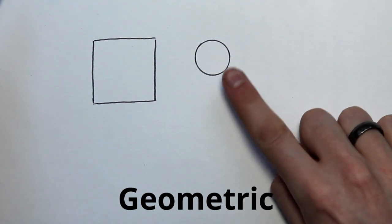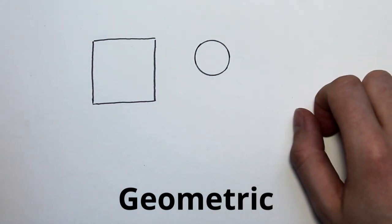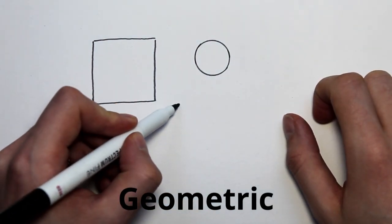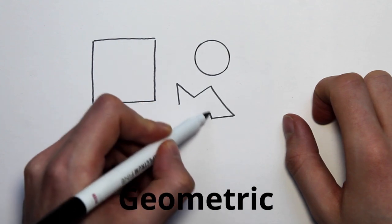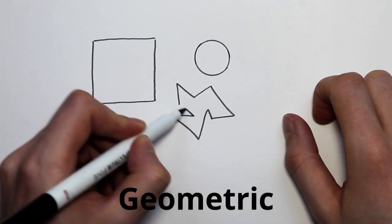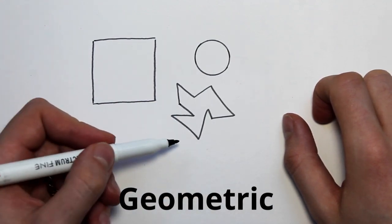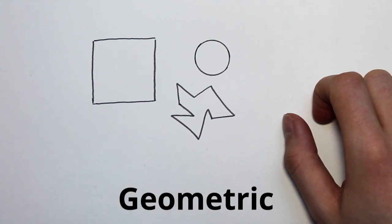Geometric shapes do not have to be these regular shapes like circles and squares. They can also be quite complex shapes that we can't always quite put a name to. So long as they've got those sharp straight edges and those sharp points at the corners, that will be a geometric shape.